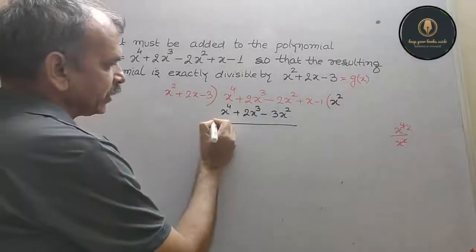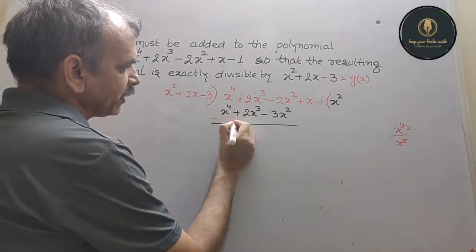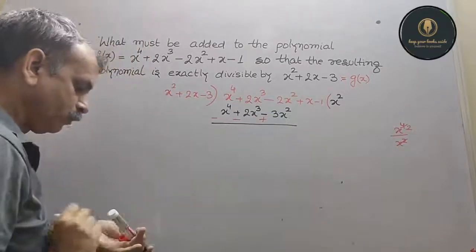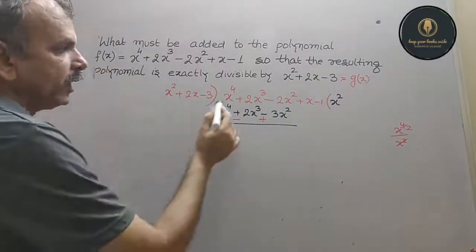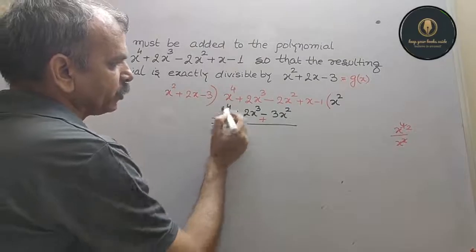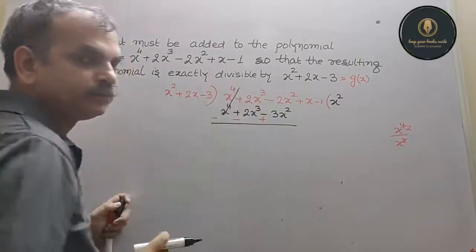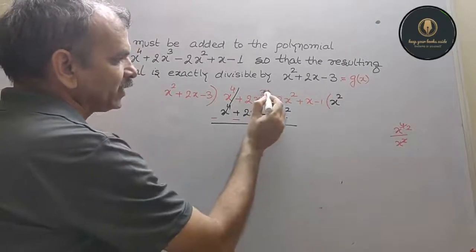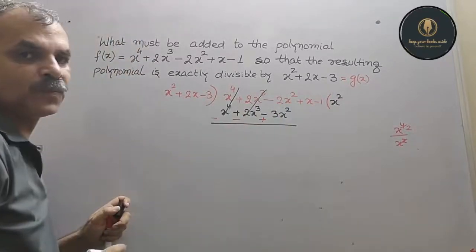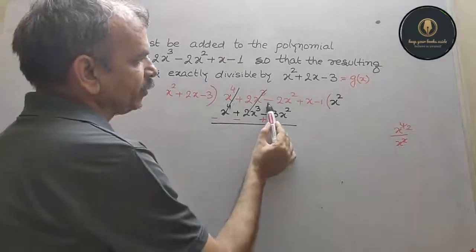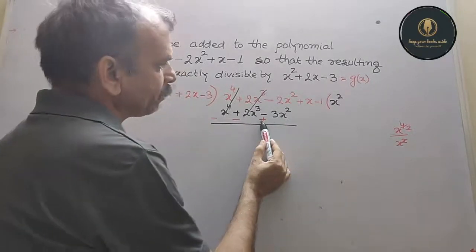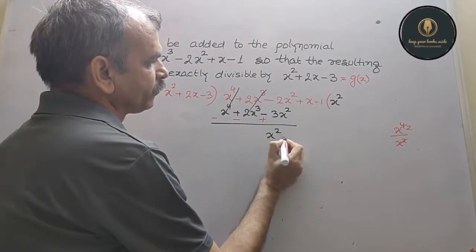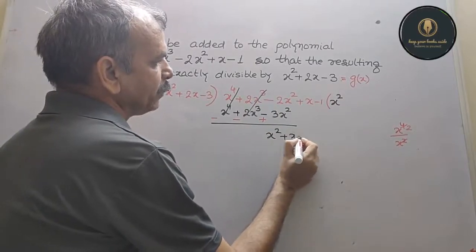Sign change: plus becomes minus, minus becomes plus. So x⁴ - x⁴ cancels, 2x³ - 2x³ cancels. What remains is: -2x² + 3x² = x², plus x minus 1.